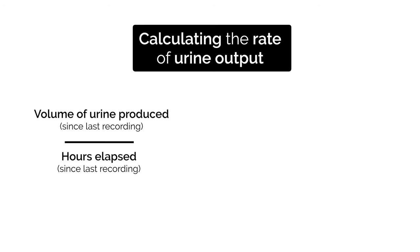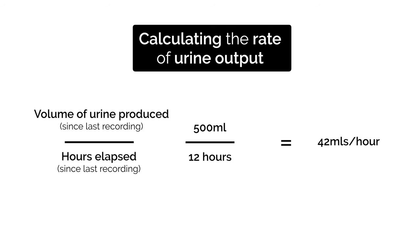So in this video, the patient has produced 500ml of urine since it was last recorded 12 hours ago. So we take the 500 and divide that by 12, and that gives us a urine output of approximately 42ml per hour.